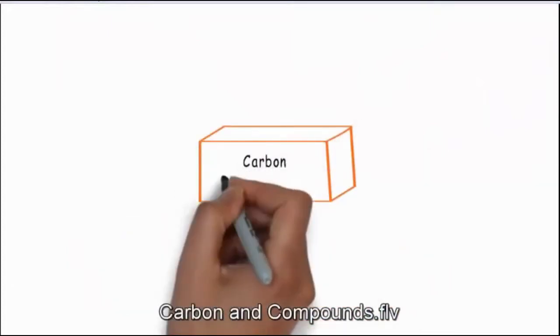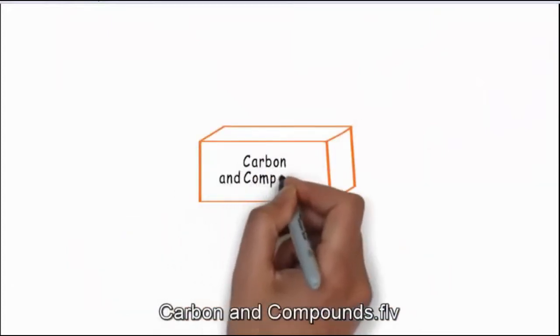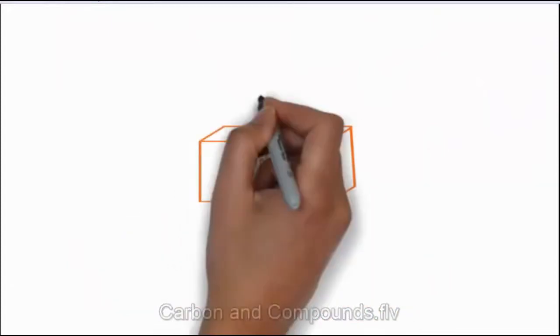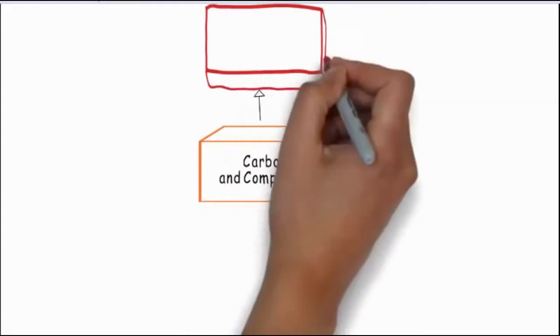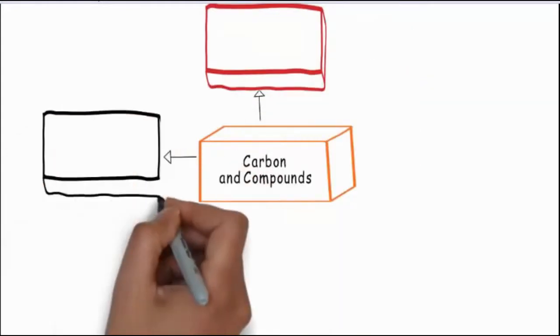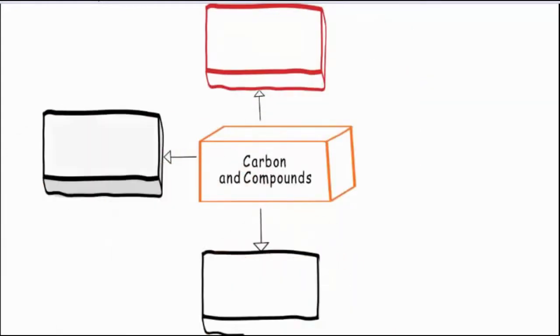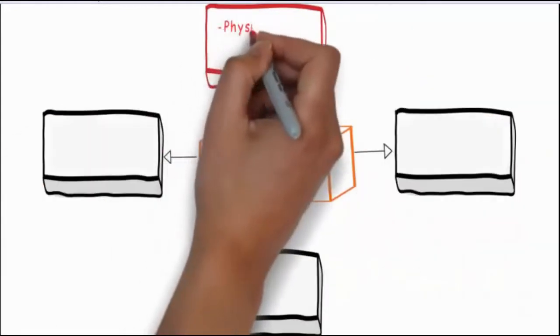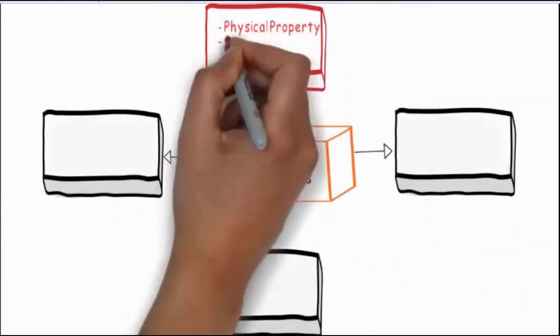Carbon and Compounds. This chapter is divided into four parts: 1. Physical properties, bonding in carbon and occurrence in nature.